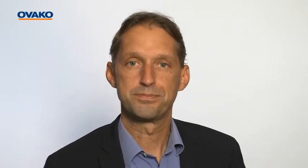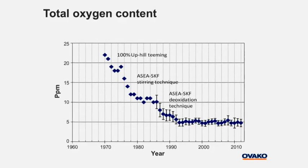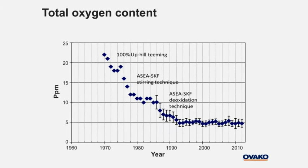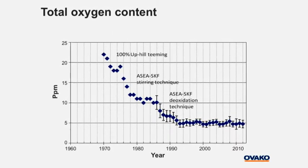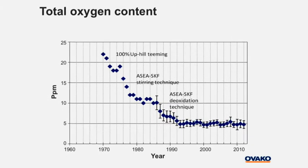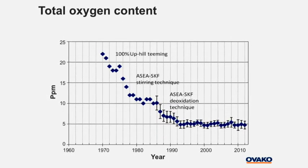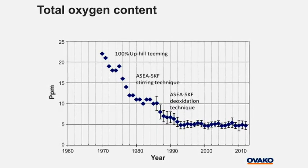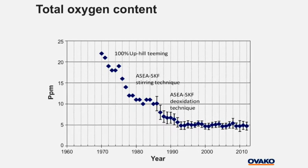This webcast will explain how BQ steel is produced and monitored to ensure quality. Ovaco has 100 years of experience producing steel for the bearing industry and demanding applications, with continuous work to improve the process. One example is the oxygen content in through-hardening bearing steel, which today averages around 4 to 5 ppm — 40 years ago, it was three times this value.